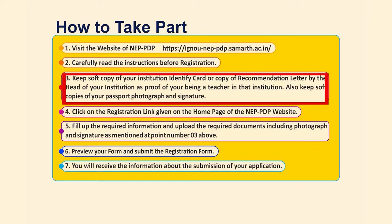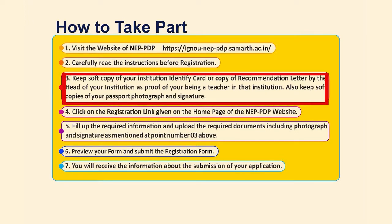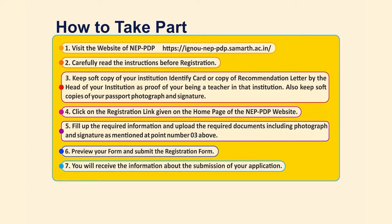Once teachers complete the registration procedure, they will upload their identity card — an institutional identity card — or a letter from their head of institution, along with a passport-size photograph and signature. Details such as name, designation, and institution must be filled in. You must click the registration link, upload all these documents, and select the six-day program to be completed in a maximum of nine days.